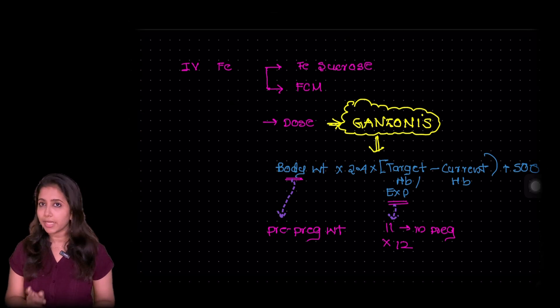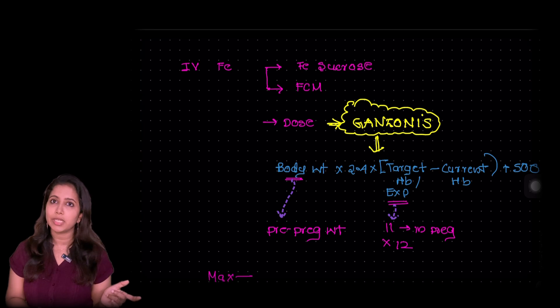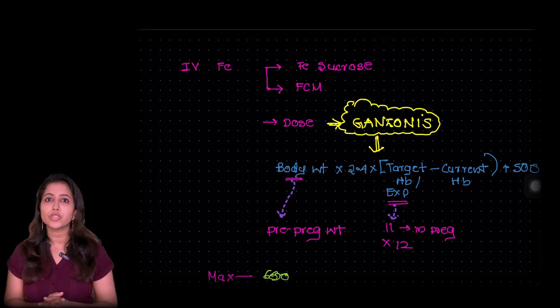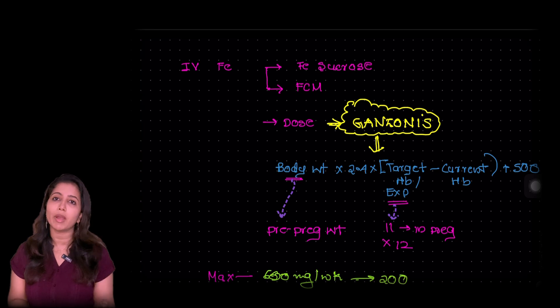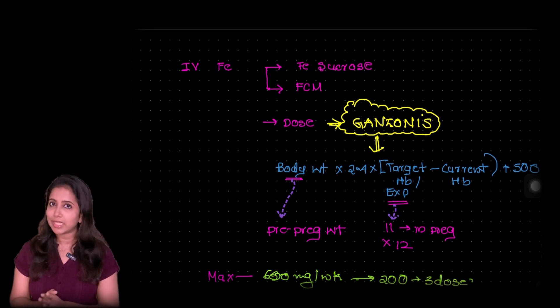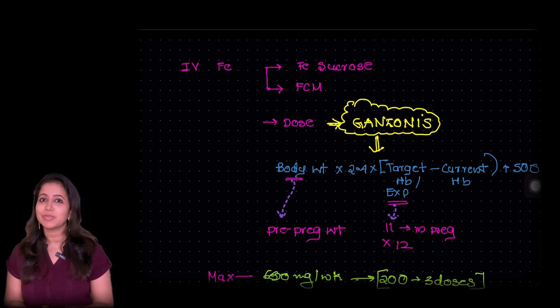So while we are giving iron sucrose, the maximum dose that can be given is 600 milligram in a week. So we usually give it as 200 milligram in 3 divided doses. Hope that makes it clear. Until next time. Thank you.